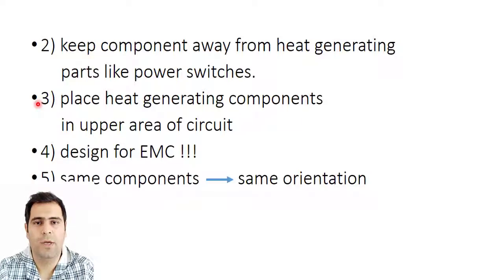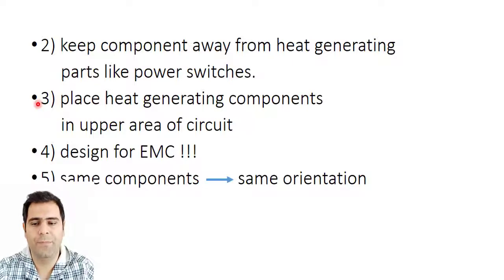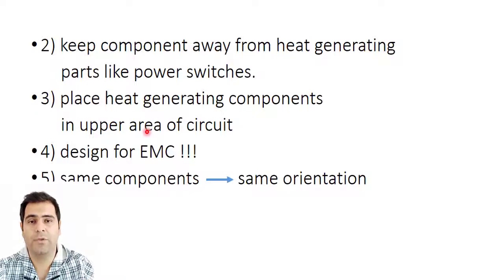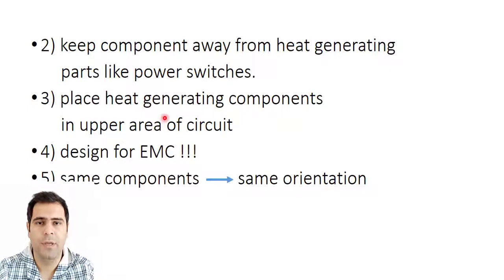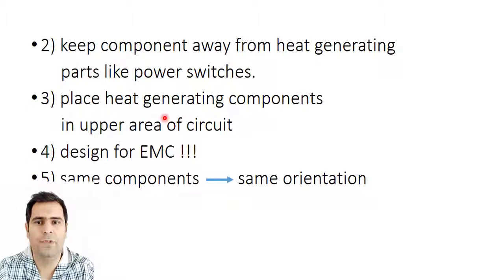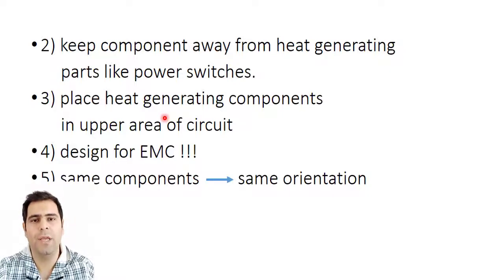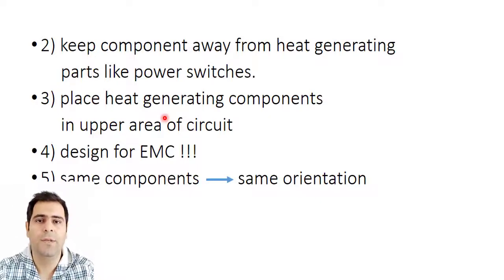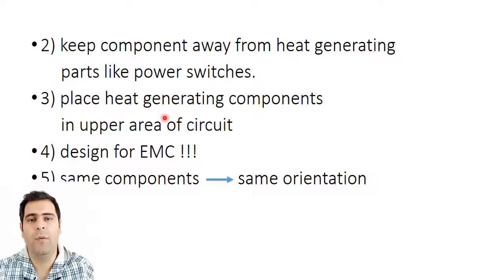Number three: Place heat generating components in upper area of the circuit. If you are working with vertical circuits, you may want to consider the heat generating, these hot elements, on the upper area. You know why? Because the heat goes up and you don't want the heat which is produced to meet all of the components. You want this heat to go outside of your circuit. So if you are working with vertical circuits, keep them in the upper area of the circuit.